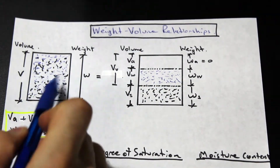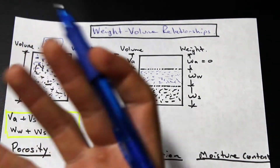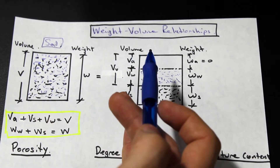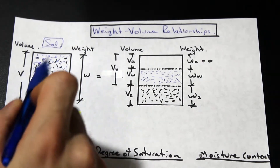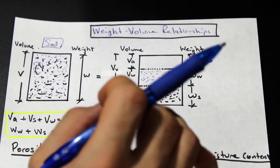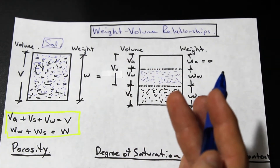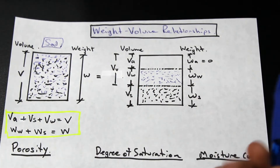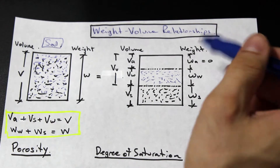We have a couple diagrams here. On the left, this is a soil. As we know, soil is made up of three different parts: a solid component, a moisture component — so there's some degree of moisture, or maybe it's completely dry, but generally there's some water inside — and there are also some voids, little pockets inside the soil that just have air. If we break down this soil sample into its constituent parts — air, water, and solids — we get what's called a phase diagram.